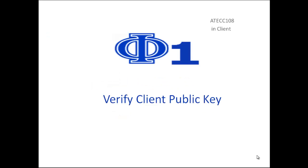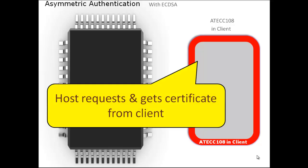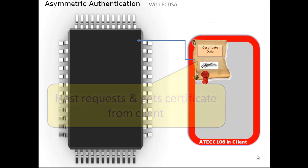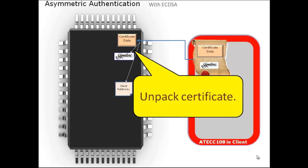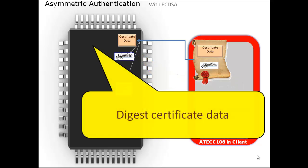Phase 1 of the ECDSA process starts with the certificate stored in the client. The host requests and gets the certificate from the client. Once the host receives the certificate, it unpacks it into the certificate data, the signature, and the client's public key. It then digests the certificate data by running it through a hash function to create a 32-byte digest in accordance with X.509 procedures.